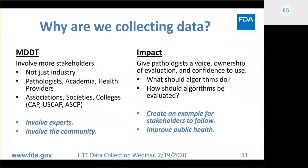We don't like to be an isolated organization here at the FDA. We want to involve all the stakeholders — not just industry, but pathologists, academics, and health providers, because this technology will impact them. We want to include the associations, societies, and colleges because they have access to pathologists and the knowledge base in pathology. By involving everybody, we'll increase the impact of our work. Giving pathologists a voice in the evaluation will give them confidence to use the algorithms. Ultimately, we're hoping to create examples for stakeholders to follow and improve public health.